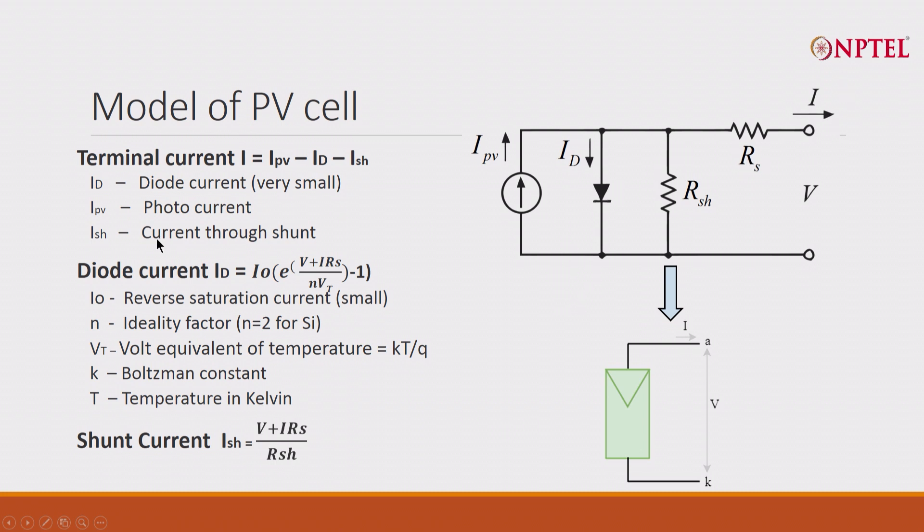And the current I is the photovoltaic current minus the diode current in the forward direction, if there is a diode current. If it is a reverse direction, ID is zero.